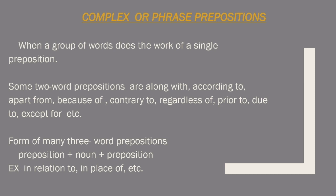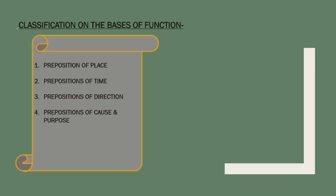So that was the classification according to form: simple, compound, and complex prepositions. Now let's talk about the classification on the basis of their function. On the basis of function, prepositions are classified into four types: preposition of place, preposition of time, preposition of direction, and preposition of cause and purpose.